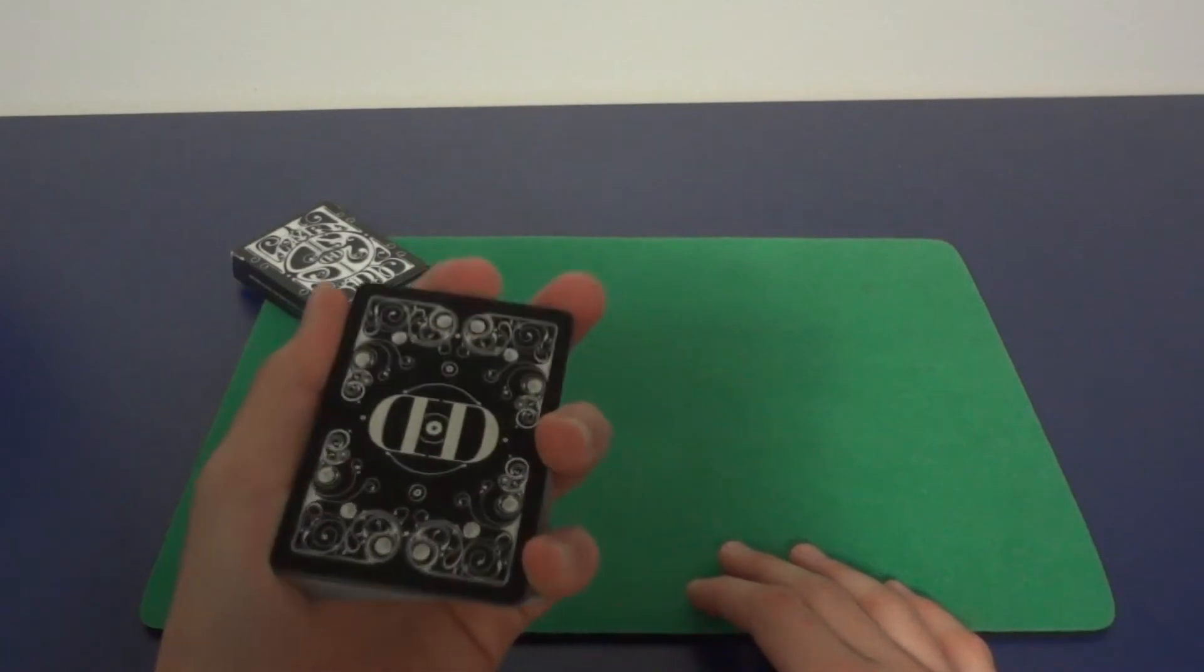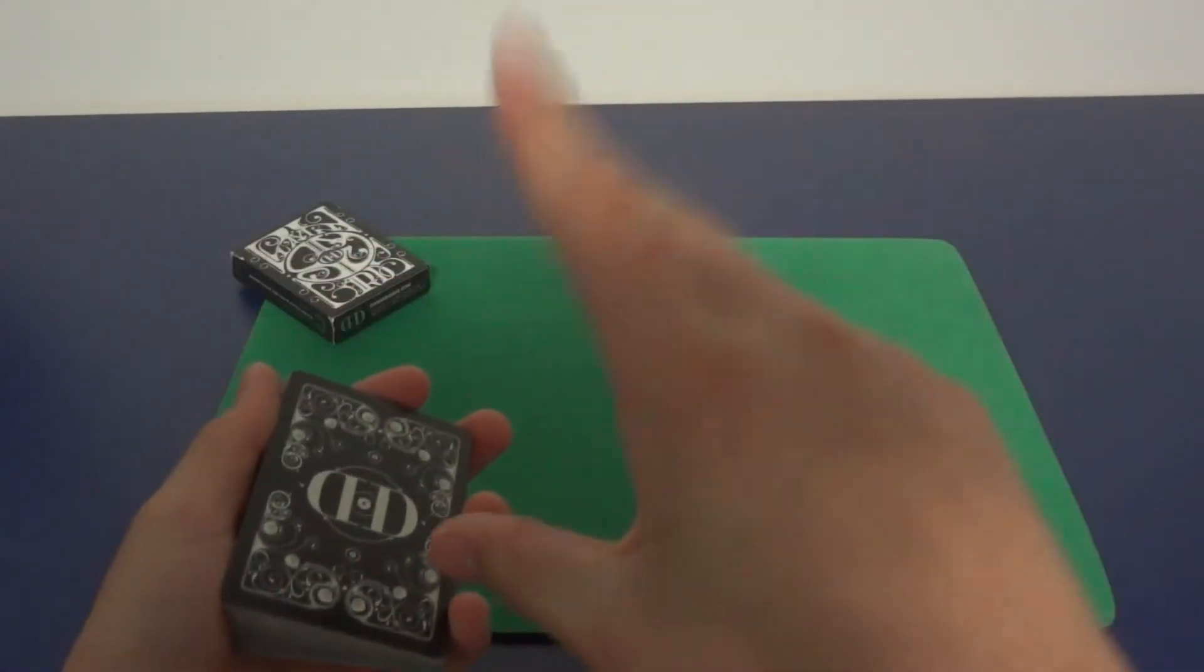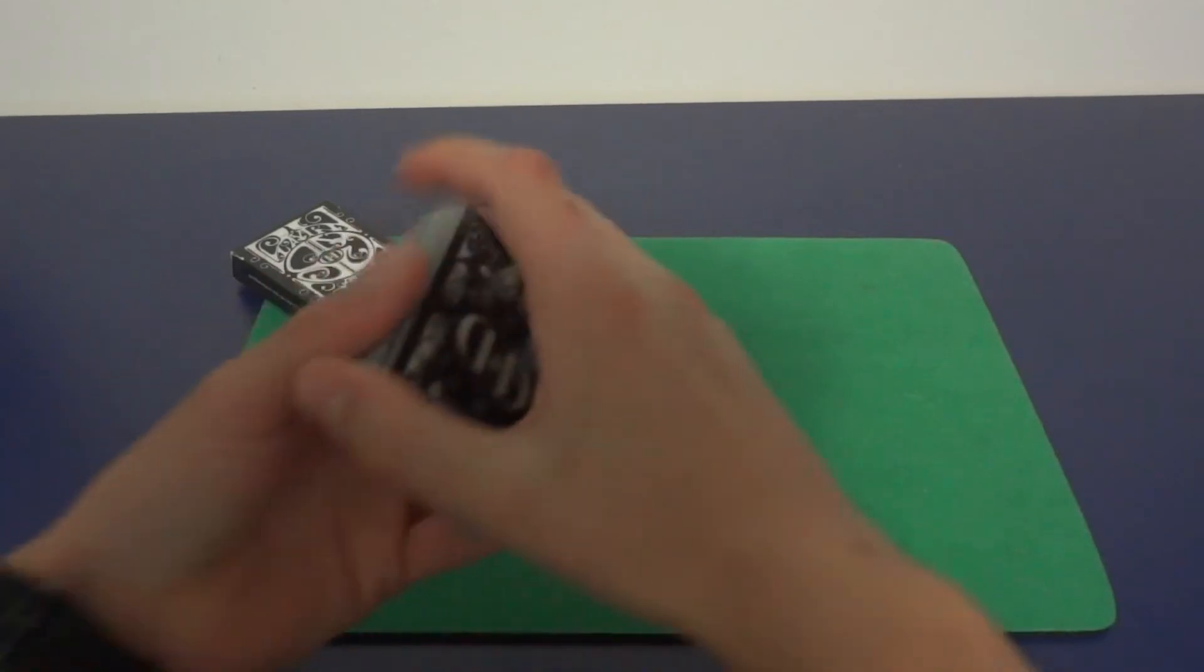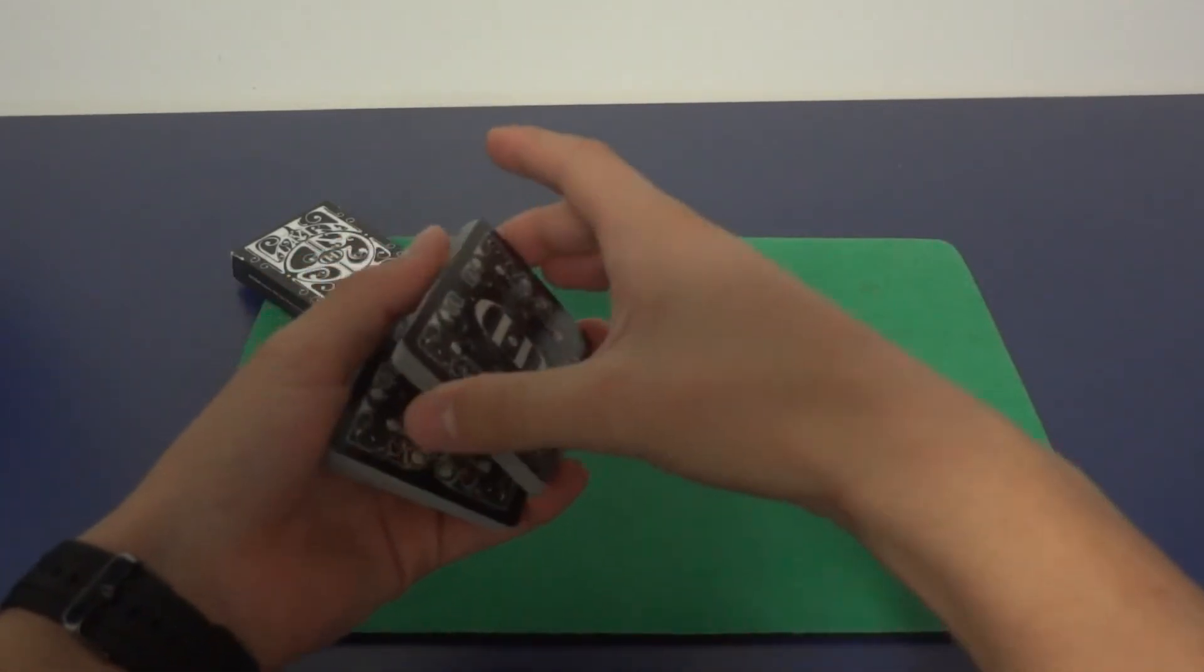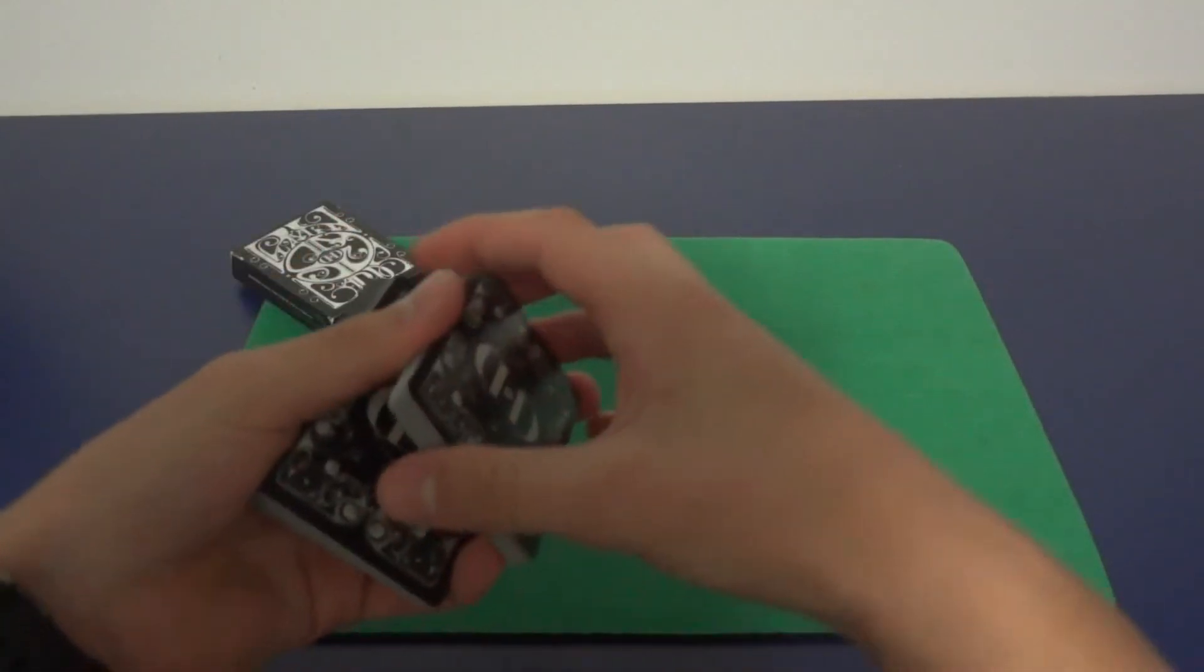You want your middle finger on the top right corner, and you're going to come over with your right hand and grab the cards like this, with your thumb on the bottom left corner. You're going to come over and pick up about a third of the cards, maybe.